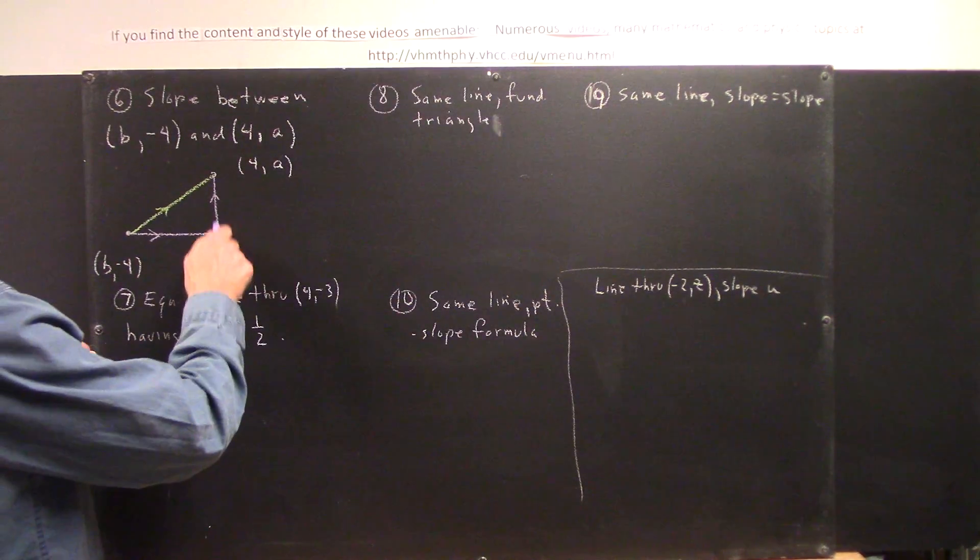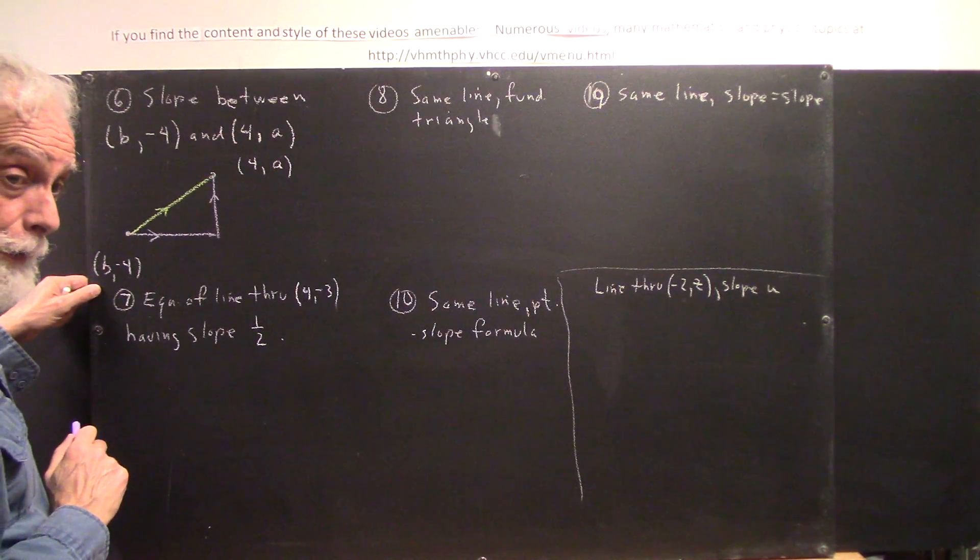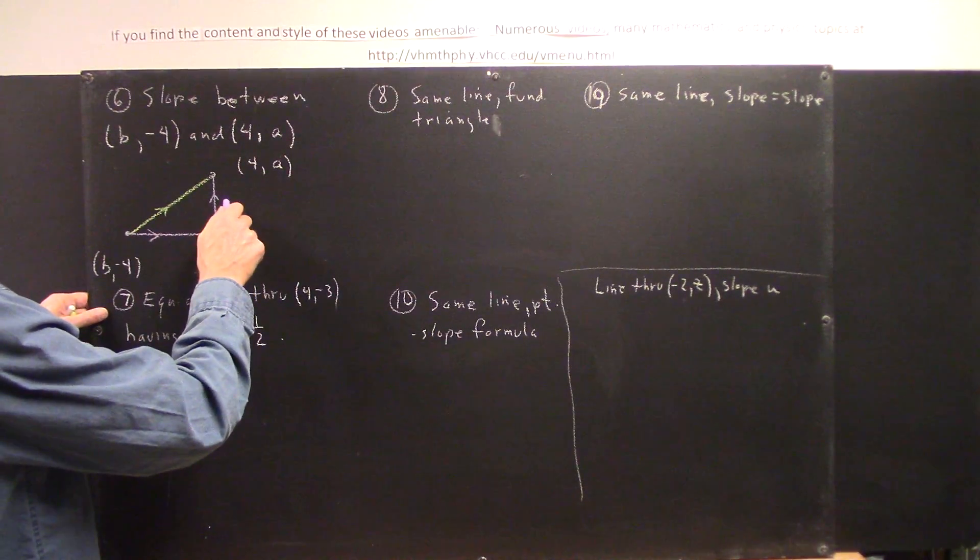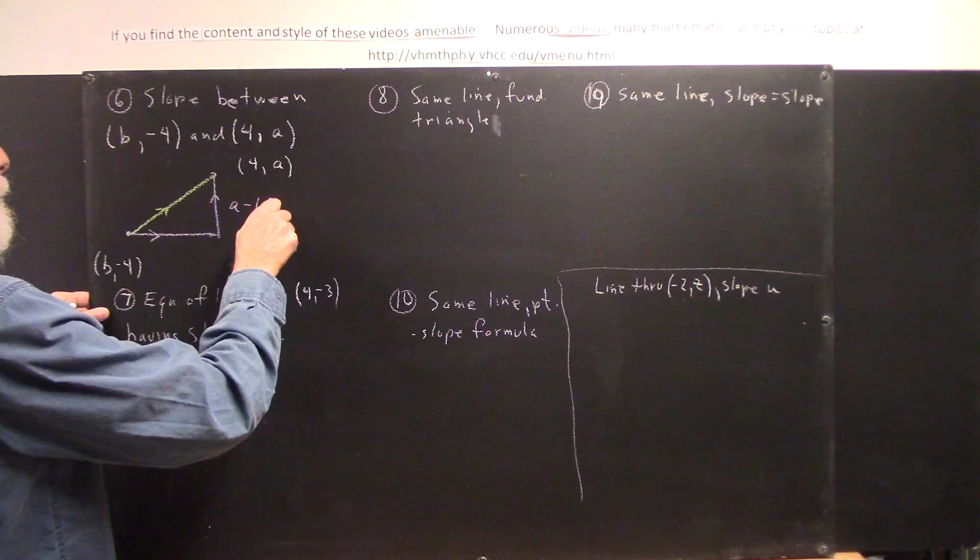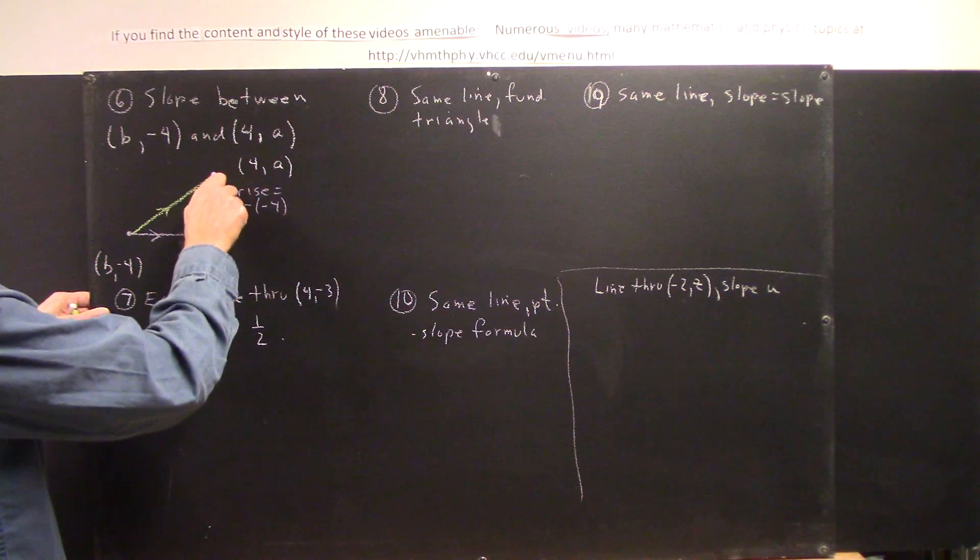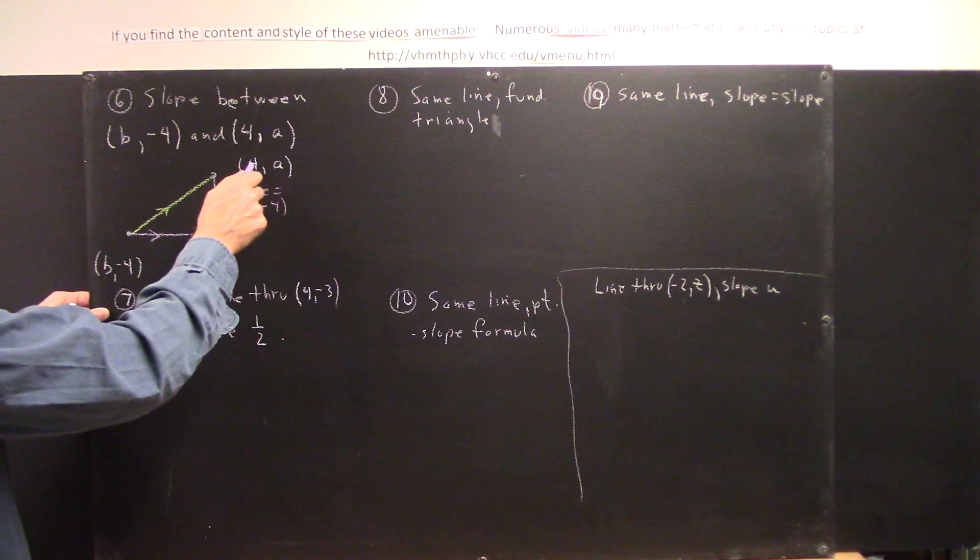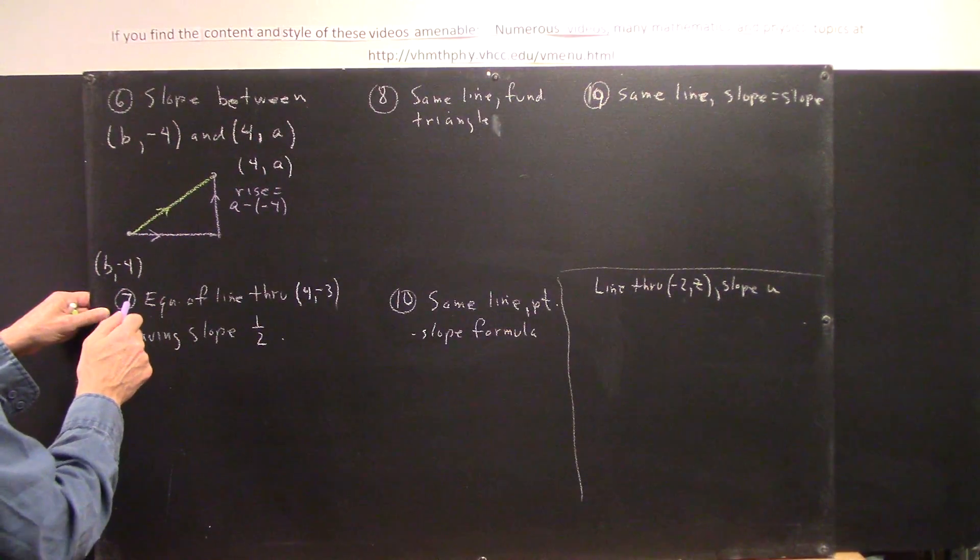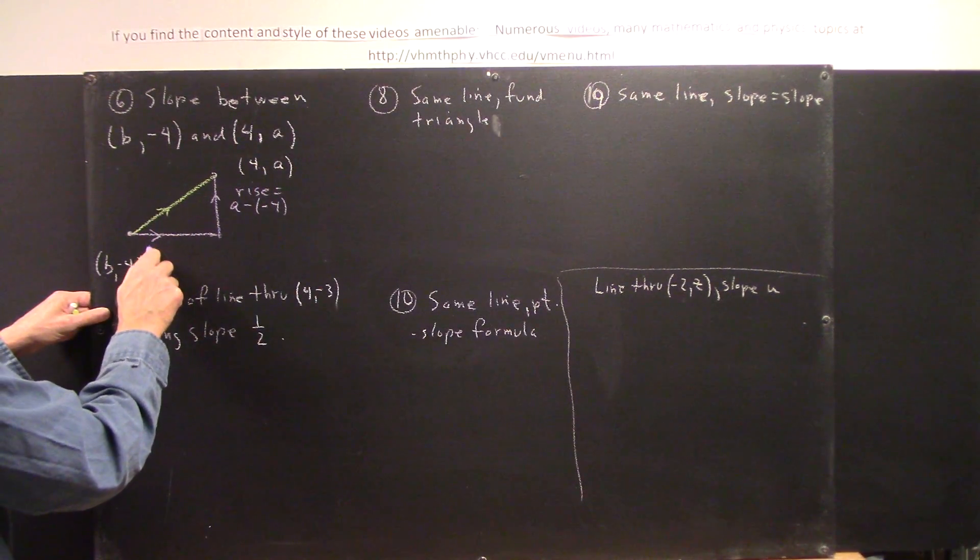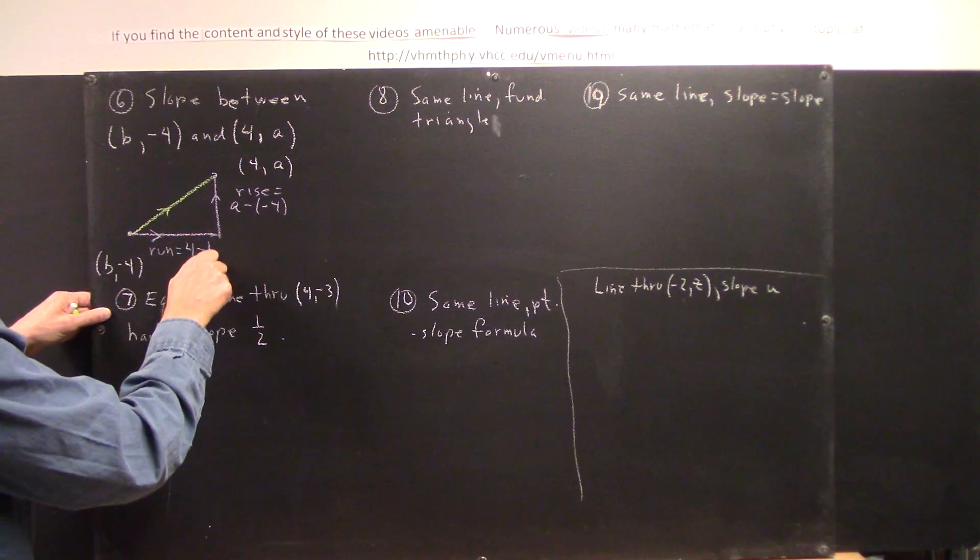Having constructed the triangle, we just automatically label the rise and the run. Well, the rise goes from one y-coordinate to another. The y-coordinate here is negative 4, the y-coordinate here is A. To go from negative 4 to A, what's our displacement? It's A minus negative 4. That's our rise from here to here. Our run goes in the x-direction, so it's the x-coordinates, b and 4, that determine it. And we're going from here to here, so we subtract this from this. So we get the run equals 4 minus b,